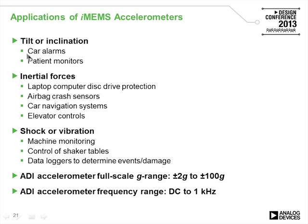Accelerometers appear in patient monitors, car alarms, and laptop disk drive protectors, among many other applications. They range from low-G devices at ±2G all the way up to over 100G. For tilt measurements, low-G accelerometers are used. Key requirements for a tilt measurement system include full 360-degree coverage, output error under 0.5 degrees, single supply, and low power.